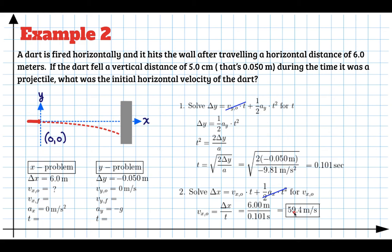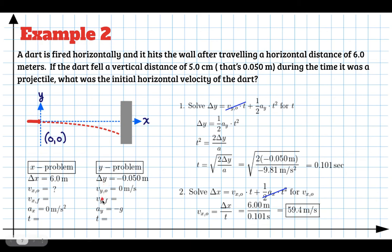On your problems, remember to make a nice big diagram showing the origin — where x and y are both zero — and draw the x and y axes. Fill out two variable lists clearly with proper subscripts so you can distinguish x from y. Use the kinematic equation to find t first, then solve for delta x or the initial velocity. We'll have practice problems in problem set 4.2.